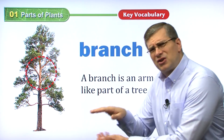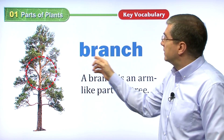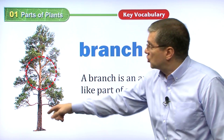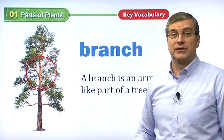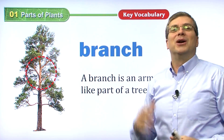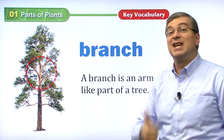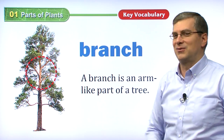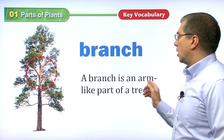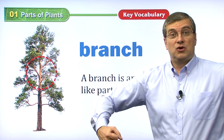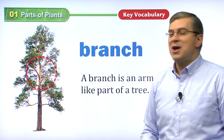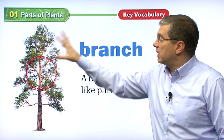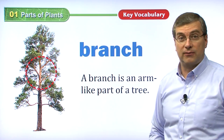Another part of the plant, especially on trees, is the branch — plural: branches. A tree has many different branches, and you can climb a tree if it has a lot of branches. A branch is an arm-like part of a tree — just like I have two arms, a tree has many branches. These branches support the leaves, where the tree takes in air and sunlight.